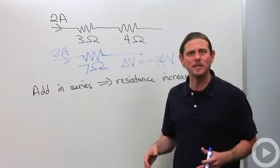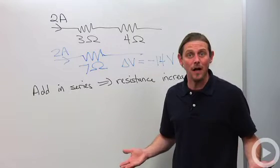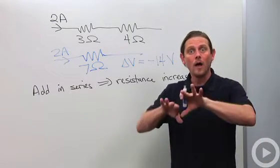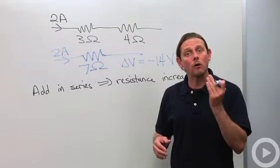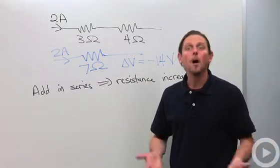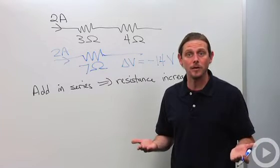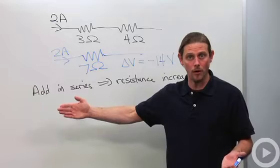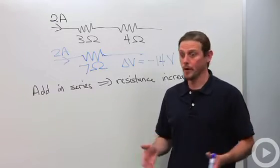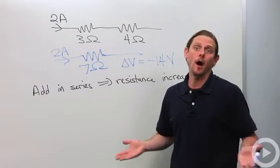One way to think about series combinations is like Christmas lights. One goes out, they all go out. Because if one goes out, then that means that the current going through that guy is zero. But current has to be the same in series. So that means all of the currents go to zero. You've got just kind of this open circuit that's not working.